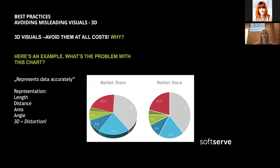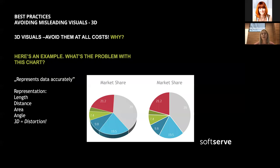Best practice number one: avoid misleading visuals, especially 3D charts — always avoid them at all costs. Here you can see two identical pie charts: one in 3D and one normal. In the 3D version, the blue segment looks like it has a higher market share than red. But in reality, the red market share has a higher percentage of total.